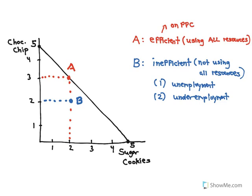Finally, what can we say about a point that is outside the PPC? So let's do this point right here at four sugar cookies and two chocolate chip and we'll call that point C. So what can we say about point C? Well for point C we could say this is unattainable. Because remember the most batches we could make is five. But here we're making six. Two chocolate chip plus four sugar cookies.